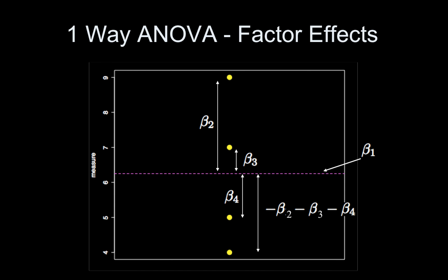I'll draw a picture here. Beta one is the overall mean of the data, and each of these points is the mean for each group. The mean for group one is reached by starting at beta one and adding beta two. To get the mean of group two, you take beta one and add beta three. Beta four is negative in this case, so you add beta one plus beta four to get the mean of group three. The mean of group four is beta one, and the difference is actually the sum of beta two, beta three, and beta four together.